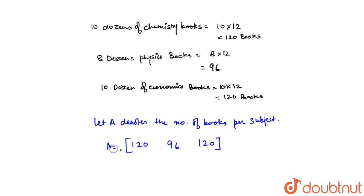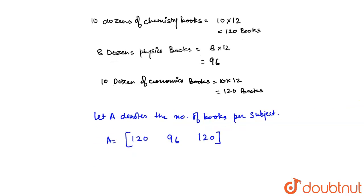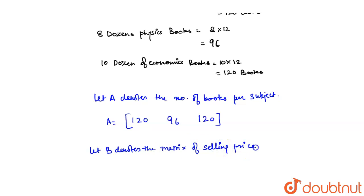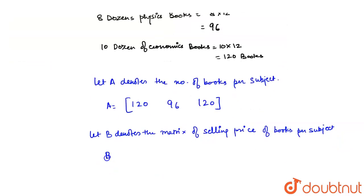Now let there be another matrix for their selling price as well. Let matrix B denote the selling price of books per subject. That is 80, 60, and 40, so B is equal to the column matrix [80, 60, 40].